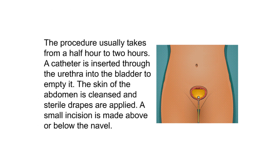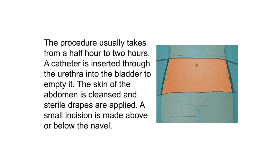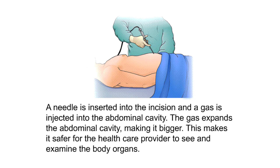The procedure usually takes from half an hour to two hours. A catheter is inserted through the urethra into the bladder to empty it. The skin of the abdomen is cleansed and sterile drapes are applied. A small incision is made above or below the navel. A needle is inserted into the incision and a gas is injected into the abdominal cavity. The gas expands the abdominal cavity, making it bigger, so the health care provider can safely see and examine the body organs.